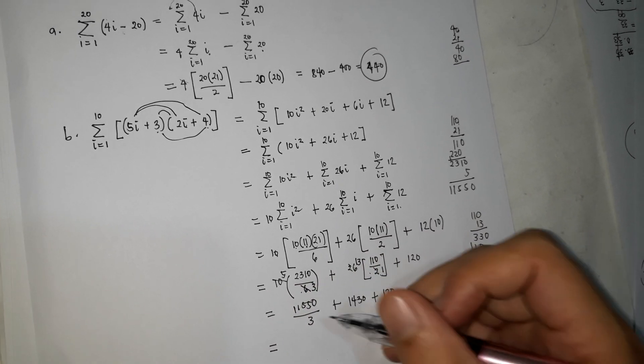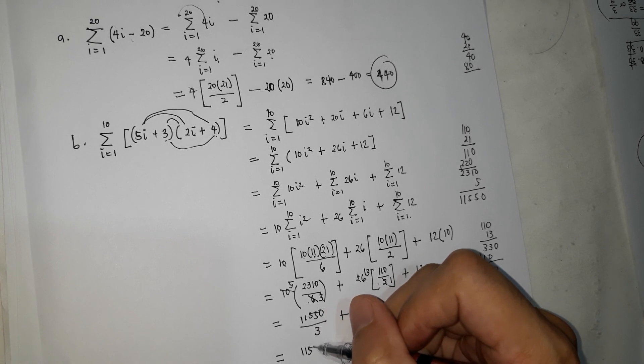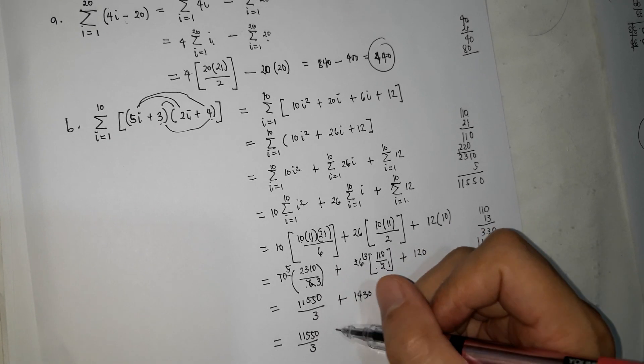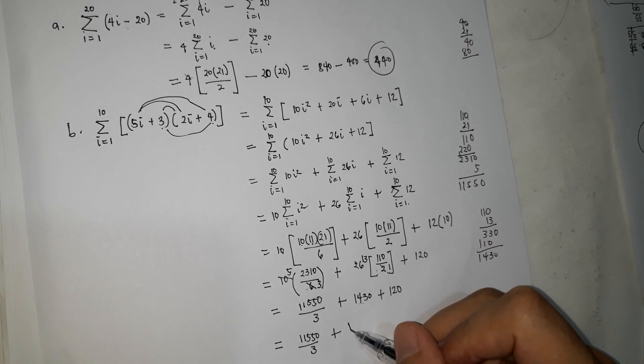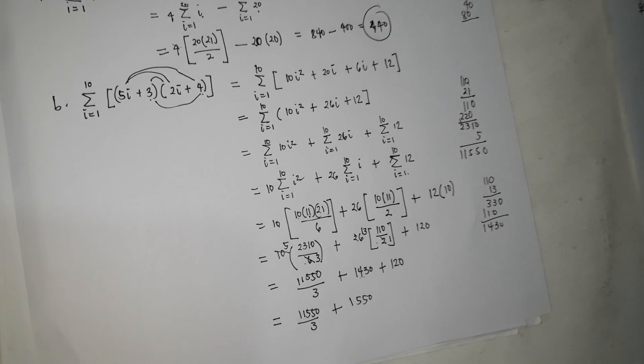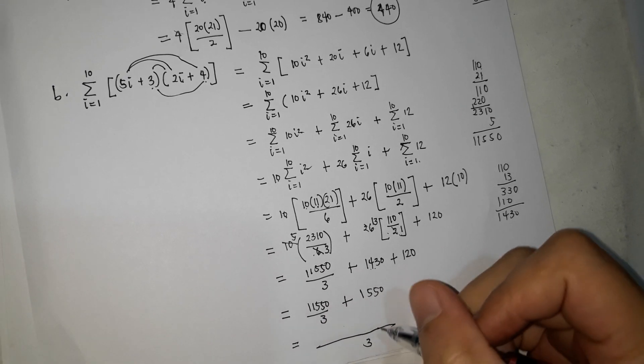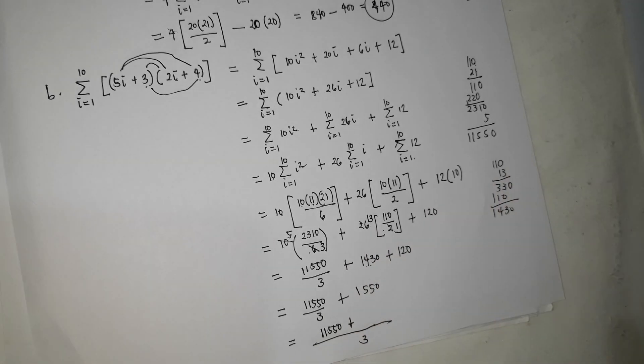So ito siya, or we'll just use that as fraction, plus 1430, plus 120, it's 1550. So to add this, denominator is fraction, pwede mo yan, 1550, or you could simply use calculator.